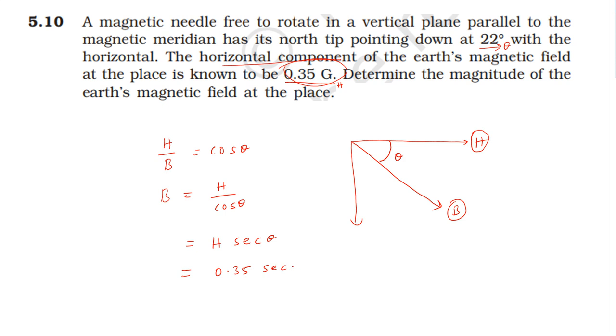Secant 22 degrees equals 1.0785. So, 0.35 times secant 22 degrees equals 0.35 times 1.0785, which gives 0.3774 gauss.